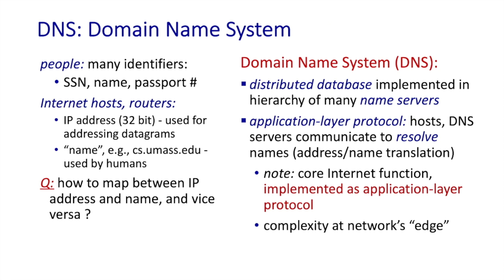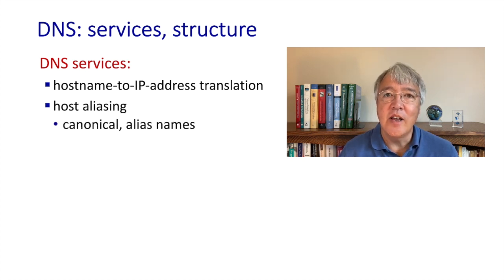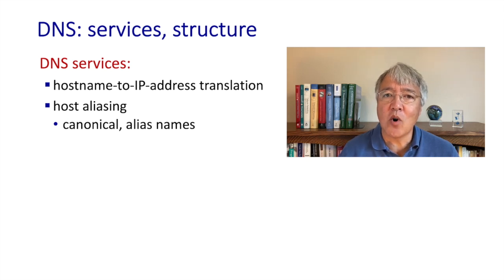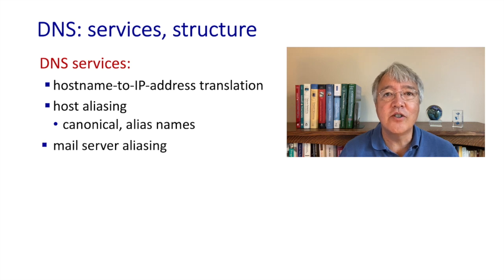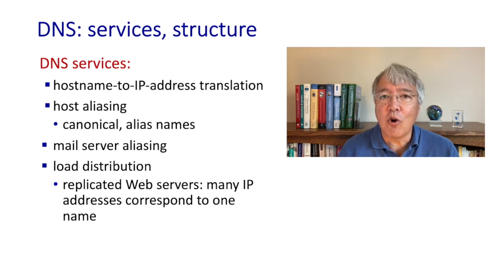This reflects an internet design philosophy of keeping the network core simple and putting complexity at the network's edge — a philosophy we'll see again at the transport and network layers. The DNS provides several functions: the IP address to host name translation service, an aliasing function translating external names like mail.cs.umass.edu to internal host names, service resolution returning the IP address of a mail server, and load balancing by rotating among multiple IP addresses for a requested service.